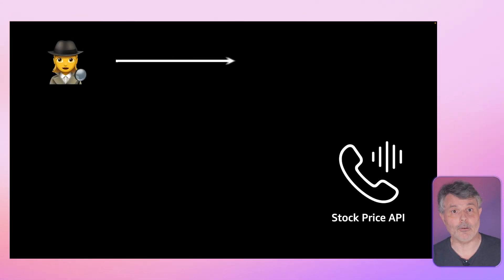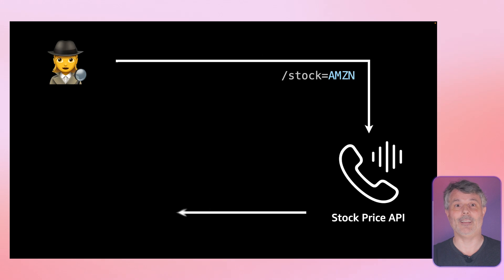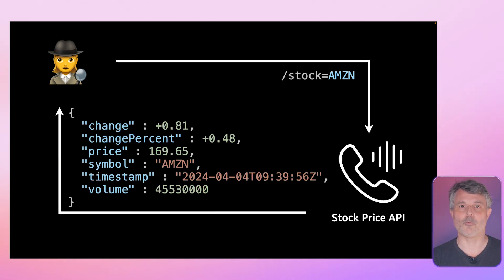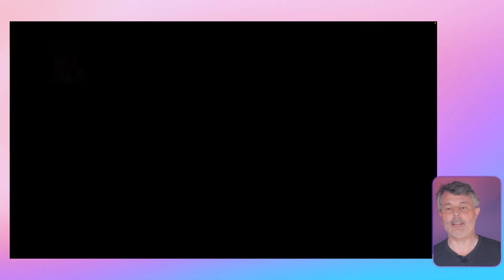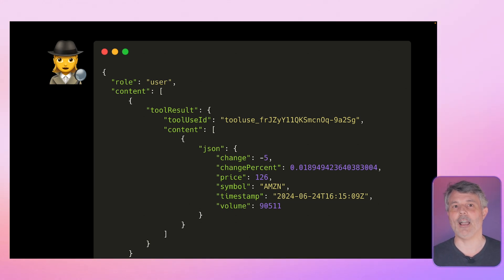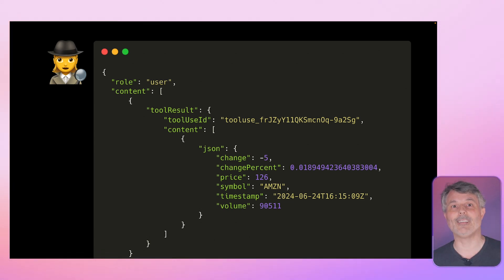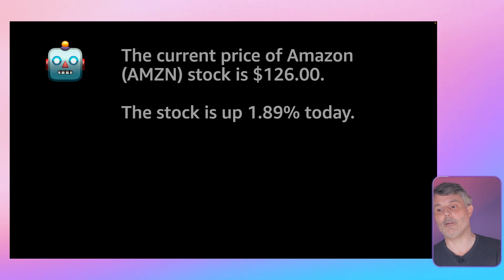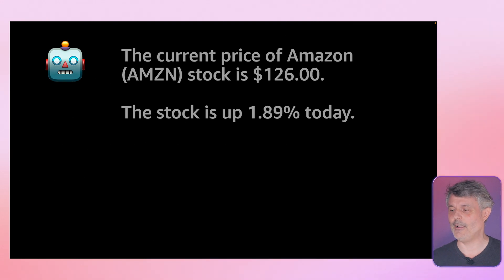Now that the agent — my code — has that information, it calls the API and waits for the answer. In a last interaction with the large language model, the agent gives the answer it received from the API to the model. Notice that the second section of the JSON is the raw copy-paste of the JSON I received from the API. Based on that information, the model generates an answer and tells me the current price of Amazon — AMZN stock is such-and-such. My API is not a real one; it generates a random price. So if you own some Amazon stock, don't be worried.